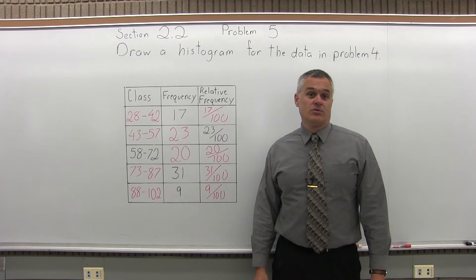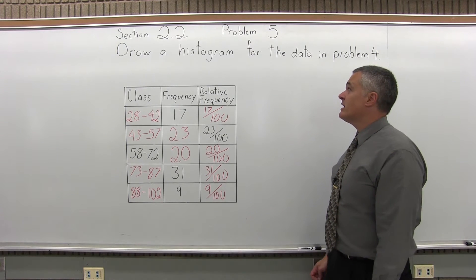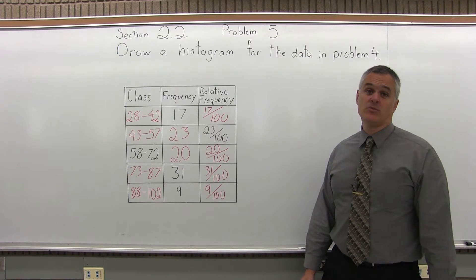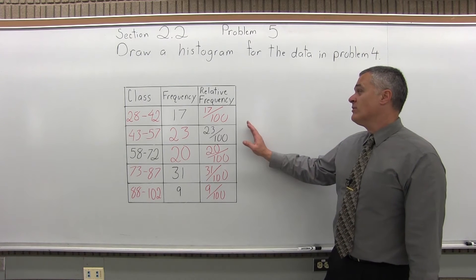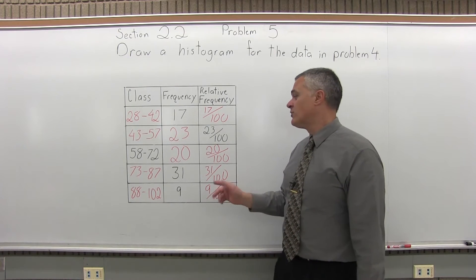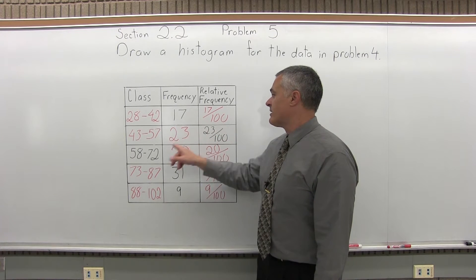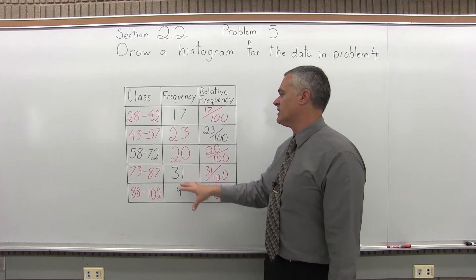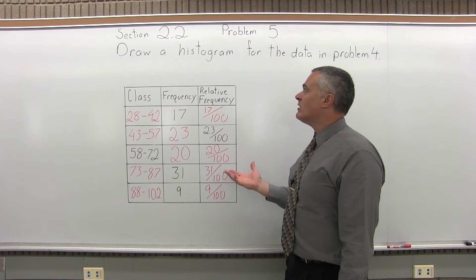This is Section 2.2, Problem 5. It says, draw a histogram for the data from Problem 4. So, what we have on the board right now is the answer from Problem 4. In number 4, the question only had the black numbers showing and we had to fill in the red ones. So, now that we have all of it, the next question says, draw a histogram for this.